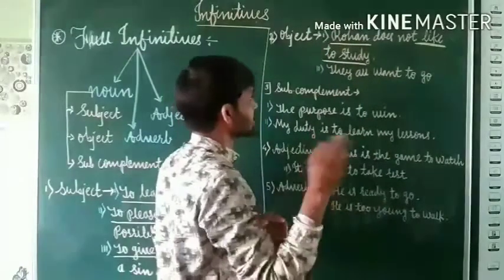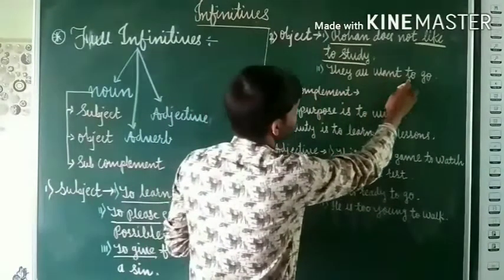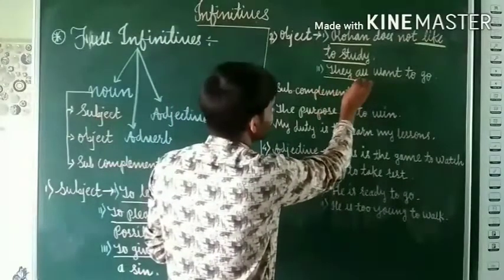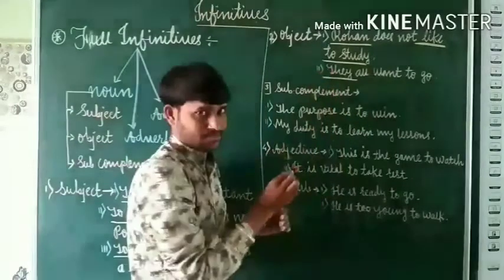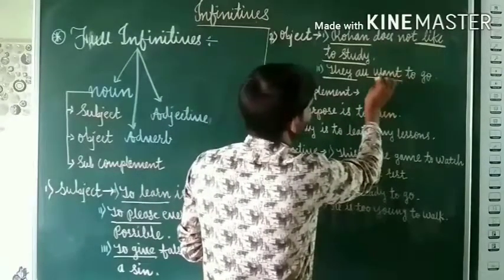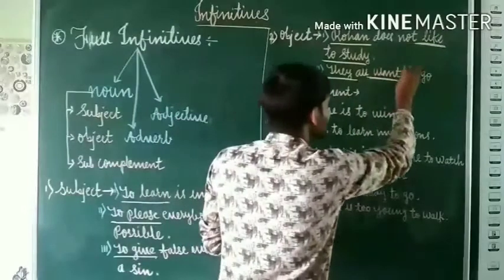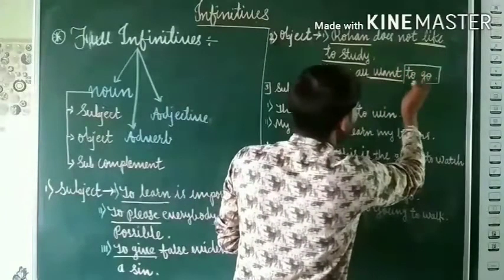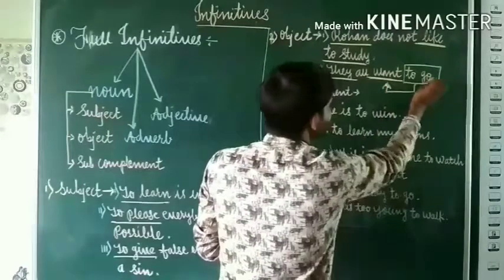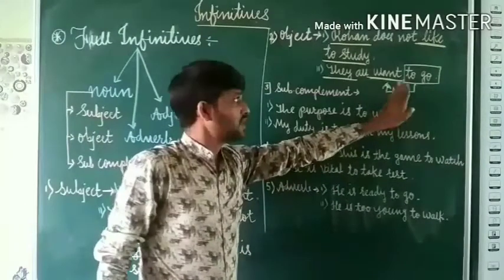Next example: 'They all want to go.' Here 'they' is the subject and 'want' is the verb. 'To go' is the object of this verb in the sentence. So 'to go' is an object of this sentence.